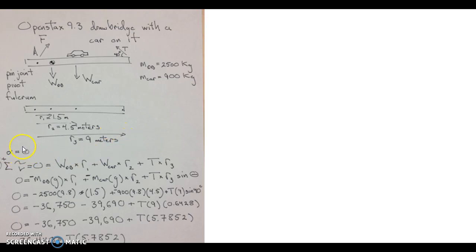And if there's no angular acceleration, that means the sum of the torques is zero. So here's the torque provided by the weight of the drawbridge. This force, this distance away from the pivot. And here's the torque provided by the car. This force multiplied by this lever arm. And here's the third torque provided by the tension.